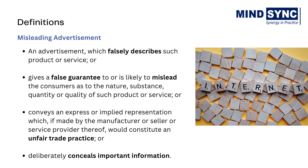Misleading advertisement has already been defined under Section 2, subsection 28, of the Consumer Protection Act 2019. A misleading advertisement in relation to any product or service means an advertisement which falsely describes such product or service, or gives a false guarantee, or is likely to mislead consumers as to the nature, substance, quantity, or quality of such product or service, or conveys an express or implied representation which, if made by the manufacturer or seller, would constitute an unfair trade practice, or deliberately conceals important information.